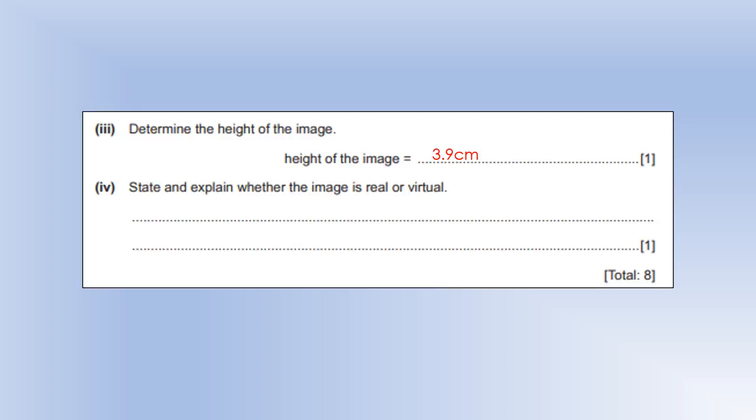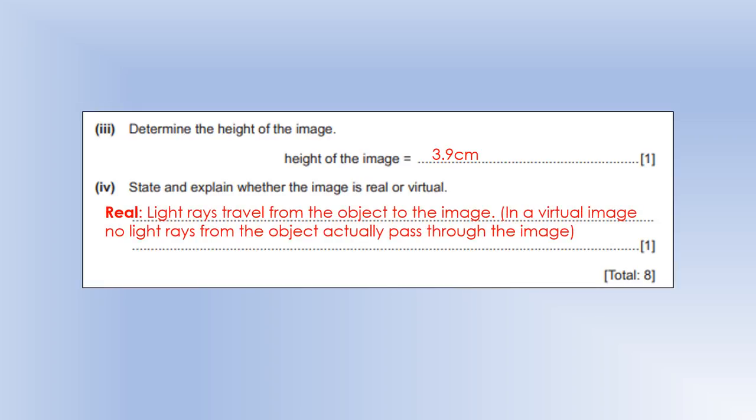So state and explain whether the image is real or virtual. Well, this image is going to be real because light rays actually go from the object to where the image is located. If it was a virtual image, no light rays from the object would actually go through the image.